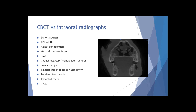The relationship of roots to the nasal cavity is another indication, as are retained tooth roots — identifying exactly where things are and what you're seeing. If a case comes to you with retained roots, perhaps something pushed into the nasal cavity, Cone Beam CT lets you identify exactly where you need to go to remove that root. Impacted teeth are another particularly important area — you can use anatomical landmarks to determine where to perform surgery. Cysts are also a significant area where you'd want Cone Beam CT.